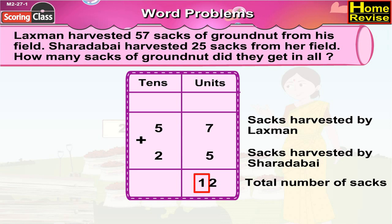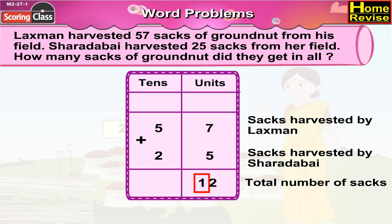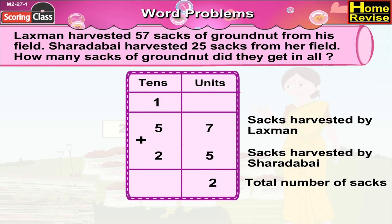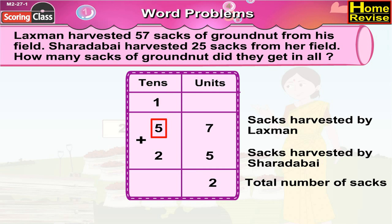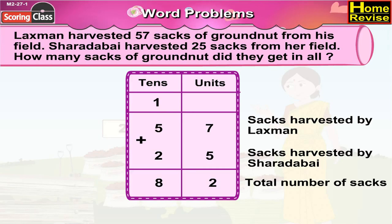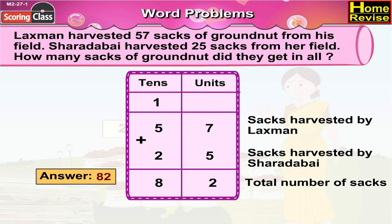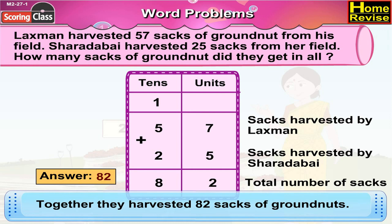So that means it is 1 ten 2 units — we take 1 ten to the tens column. Then it is 1 ten plus 5 tens plus 2 tens, that is 8 tens. So it is 82. Together they harvested 82 sacks of groundnuts.